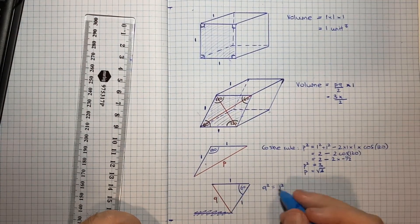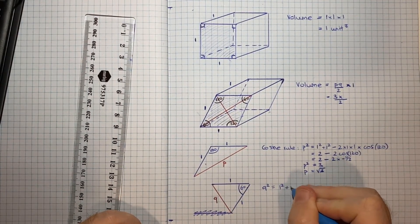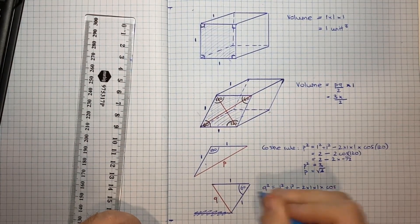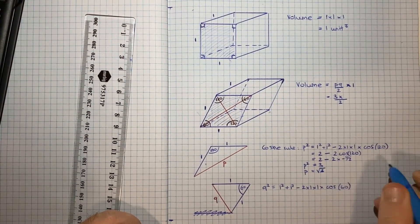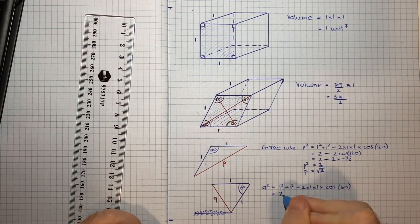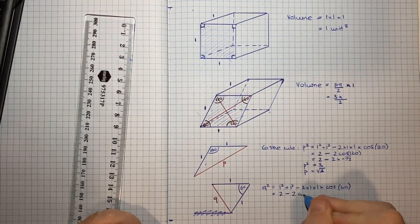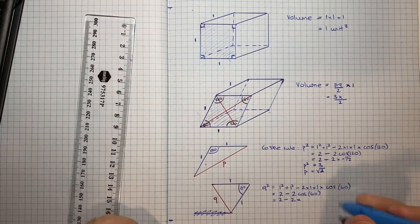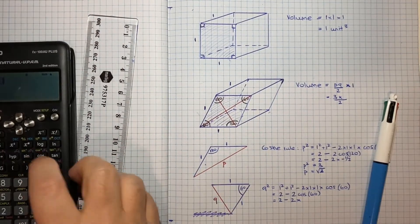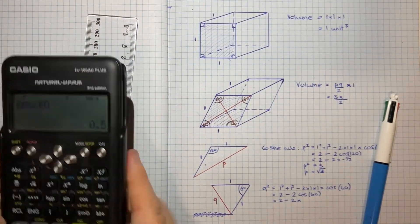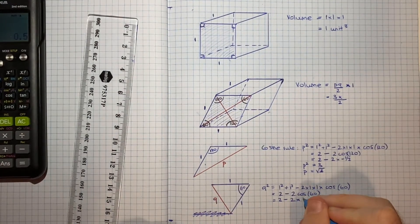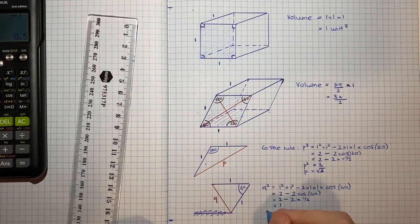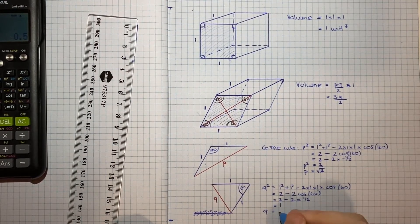So now a similar idea for Q. So Q squared will be 1 squared plus 1 squared minus 2 times 1 times 1 times cos of 60 this time. So that's using the cosine rule again. So that's going to be 2 minus 2 cos 60, which equals 2 minus 2 times, and let's do cos 60 in the calculator. So that's a half. So 2 minus 1 would be 1. So that means Q would be equal to the square root of 1 or 1.